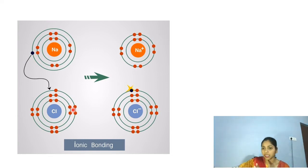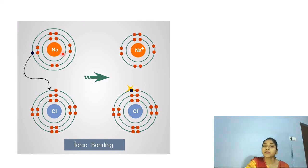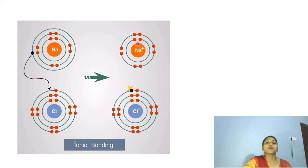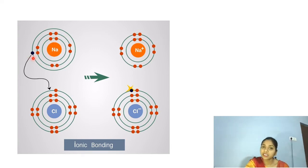Chlorine is a halogen on the right side, and it has one electron less compared to the stable electronic configuration — it has seven electrons in its outer shell. Now, sodium has two plus eight plus one equals eleven electrons and eleven protons. When sodium gives away its one electron, there are still eleven protons but now only ten electrons. That is why sodium acquires a positive charge — one proton is in excess.